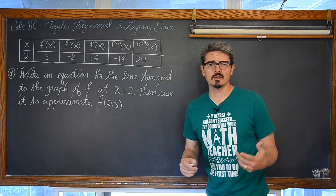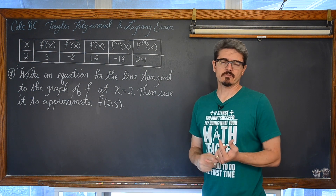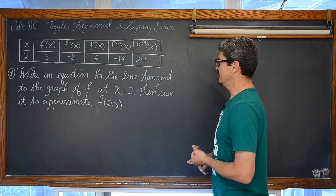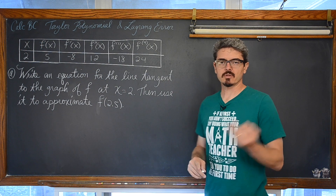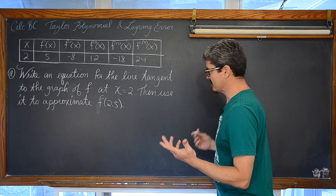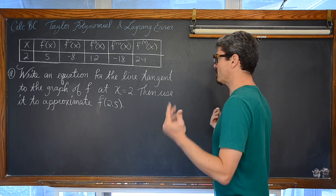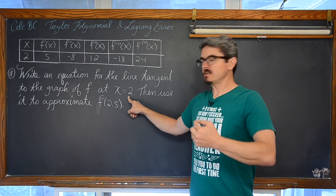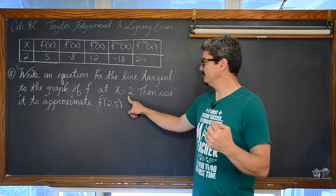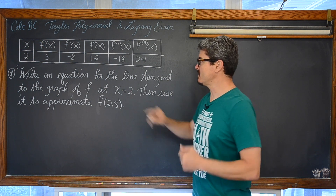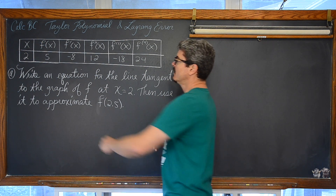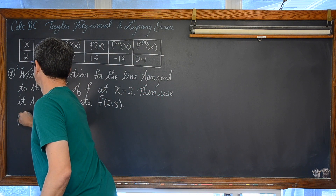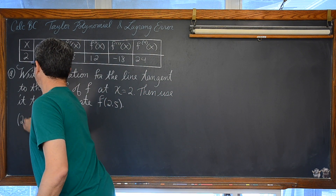Well what do you need to write the equation of a line? You need a point and a slope. And this is really a Calculus AB question — you could argue it is just an algebra question. Well we have the independent variable x equals 2, and we have a y value of 5. So we have the point (2, 5).